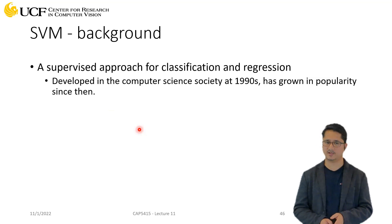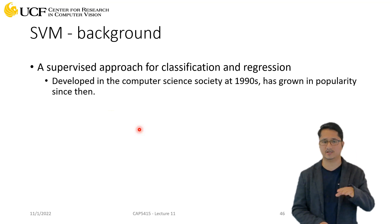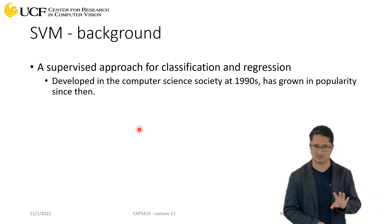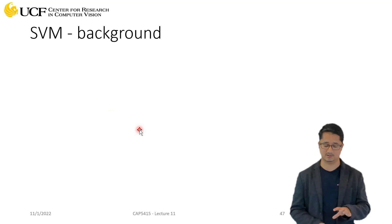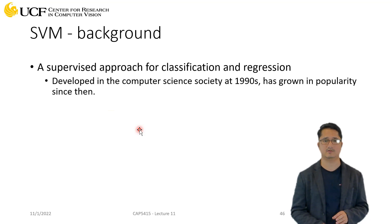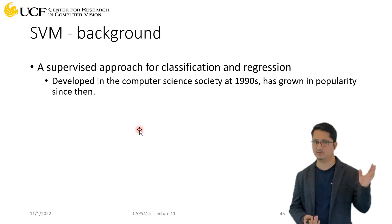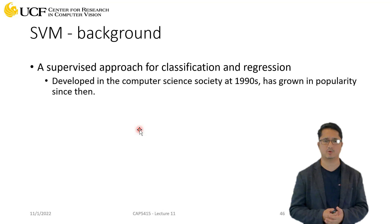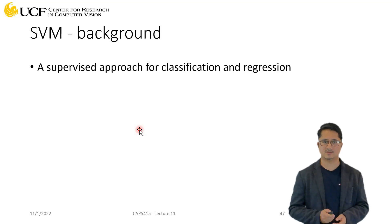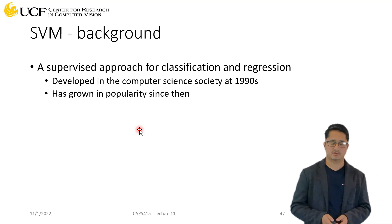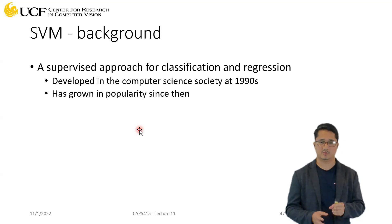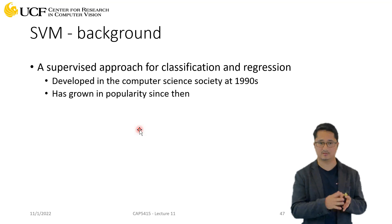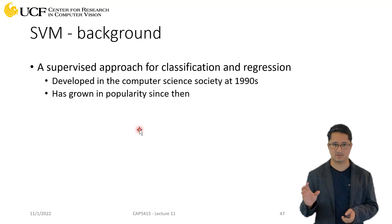We won't dive too much into the optimization equations — just the intuition, since optimization is a separate topic. SVMs were developed in the 1990s and were very popular until 2012, after which deep learning took over. During the 1990s researchers were also working on neural networks, but support vector machines were working really well and they still work well today — they are very powerful.